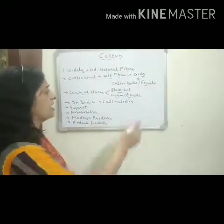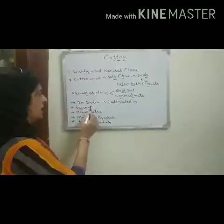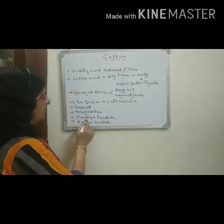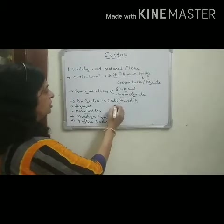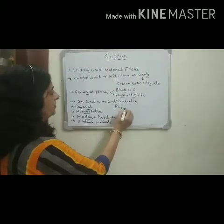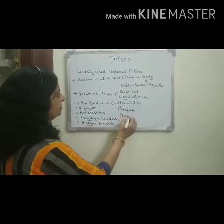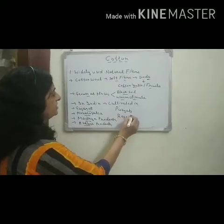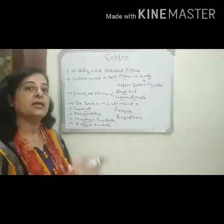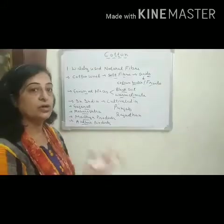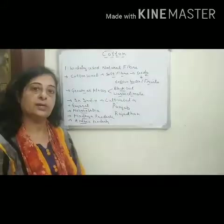In India, cotton plants are mainly cultivated in Gujarat, Maharashtra, Madhya Pradesh, Andhra Pradesh, Punjab, Rajasthan, etc. Places which have warm climate and black soil are the most suitable for the cultivation of cotton plants.